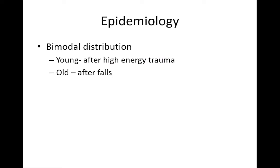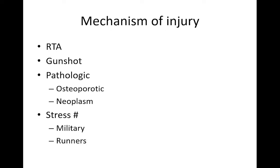Shaft of femur fractures in adults also carry a bimodal distribution, with peaks in young patients with very high energy trauma and in older osteoporotic patients after falls. Mechanisms of injury include road traffic accidents, gunshot wounds, pathological fractures following osteoporosis or neoplasms, and stress fractures such as in military recruits and marathon runners.